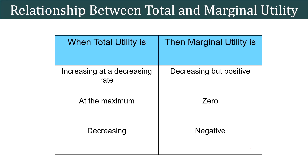Let's understand the relationship between total utility and marginal utility. In the first stage, total utility is increasing at a decreasing rate and marginal utility is decreasing but positive. At the second stage, total utility reaches its maximum point and remains stable — it neither increases nor decreases — and the marginal utility is zero. At the third and last stage, total utility starts falling and the marginal utility becomes negative.